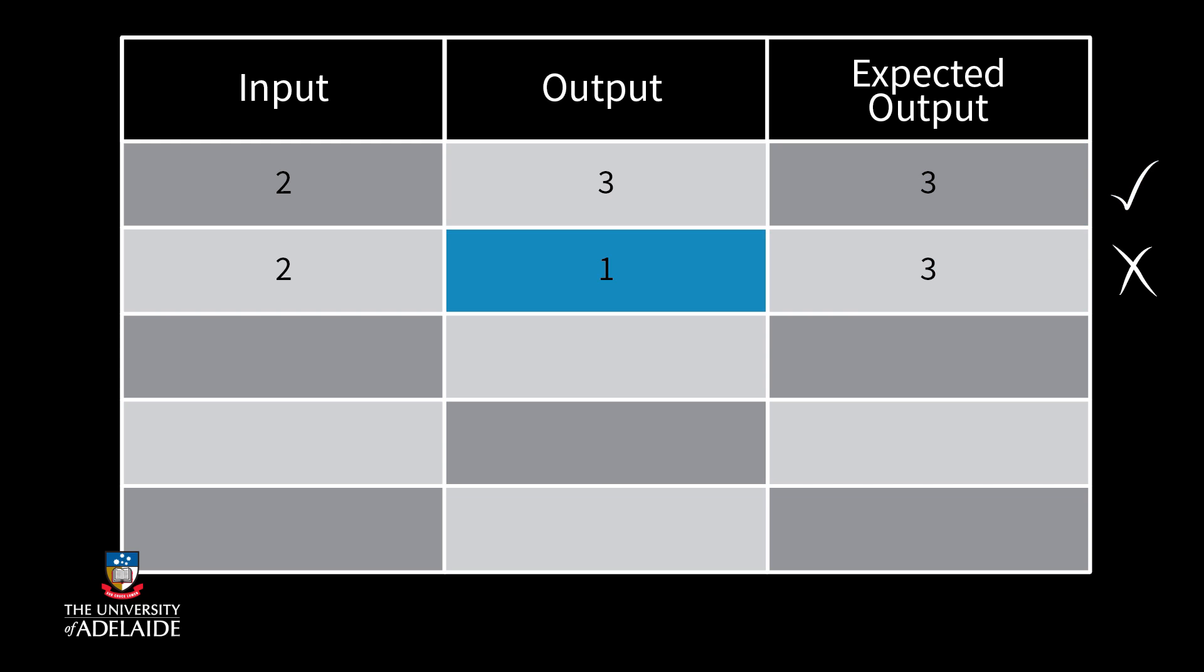If the program produces as output a value that is not 3 then we know our test case has failed and that there is a problem with our program. The more test cases that we define in our testing process the more confident we can be that our program behaves as expected.